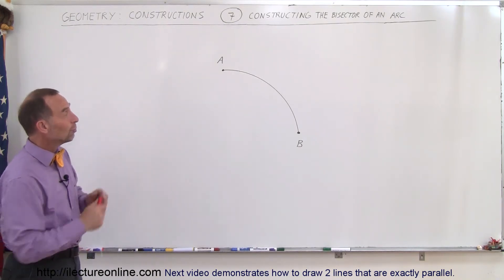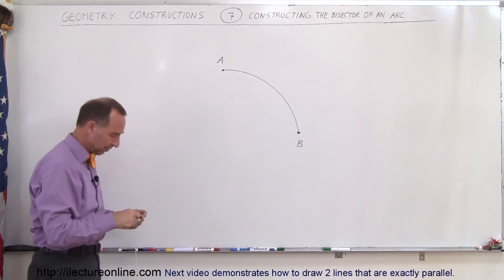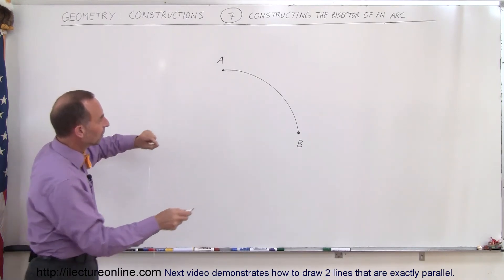You find the two points of the arc, point A and point B. So now you grab a pen and a compass, and you go to one of the ends right there.